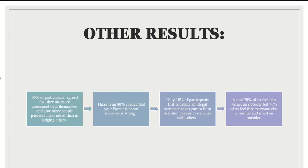Here are a few other results: 90% of participants agreed they are more concerned with how others perceive them rather than with judging others. There is an 80% chance that your paranoia about someone is wrong. Only 10% of participants who consume an illegal substance do so to fit in or socialize. And about 70% of us feel like we're an outsider, but 70% also feel that everyone else is normal and not an outsider — so it's completely irrational, because nobody else is thinking you're an outsider.